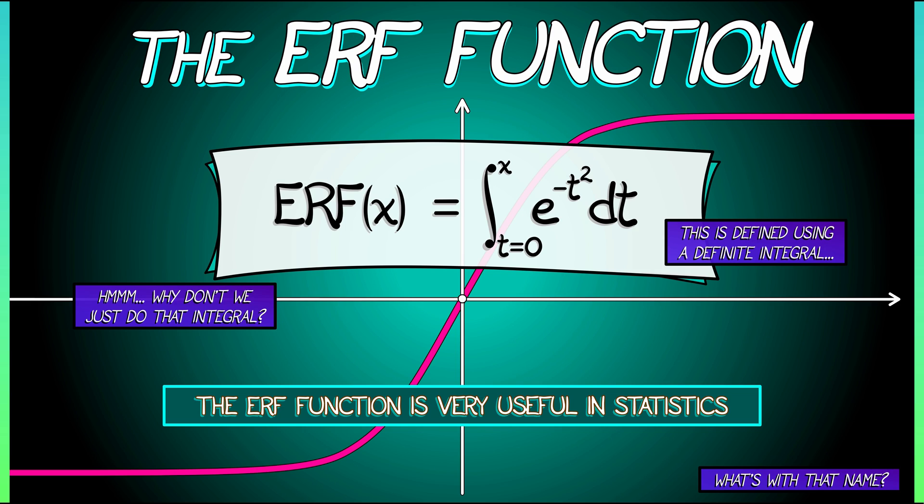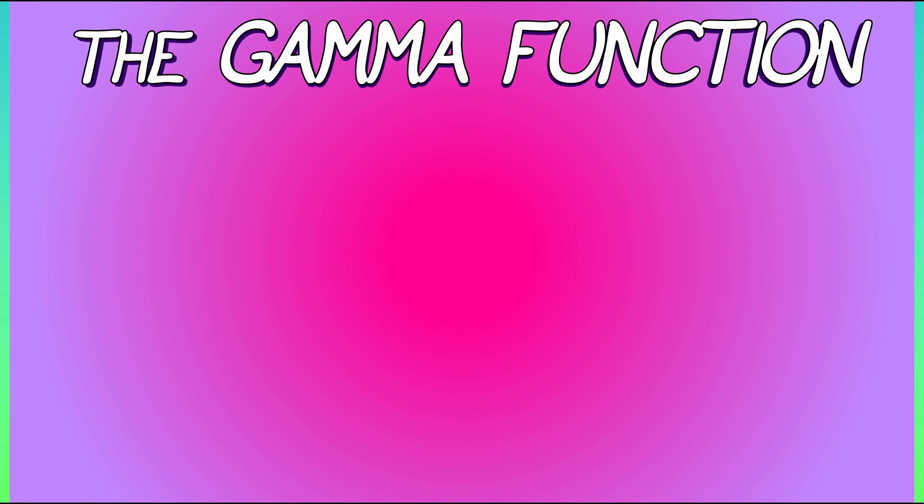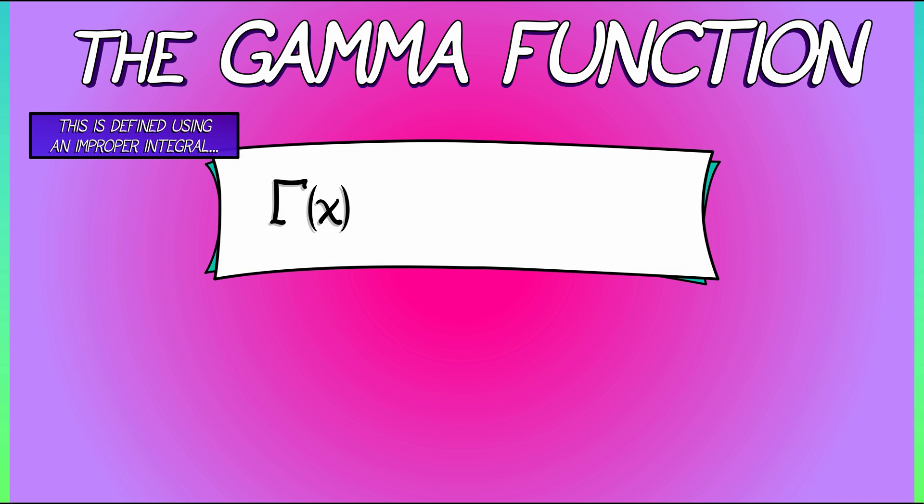Now, that's not the only function defined in terms of integrals. The all-important gamma function also has a definite integral as its basis. The gamma function is called, of course, gamma of x. And that is the integral as t goes from 0 to infinity of t to the x minus 1 times e to the minus t dt. Now, this, too, is something where you might wonder, why don't we just do that?